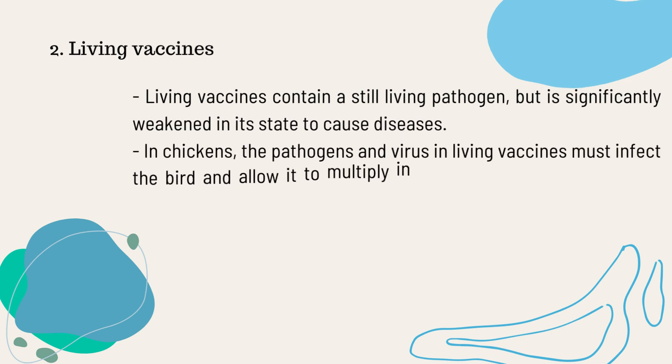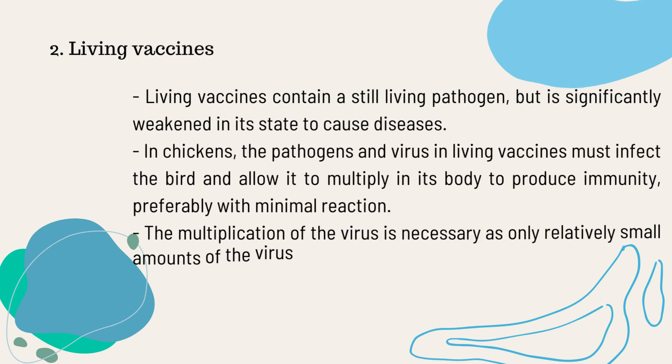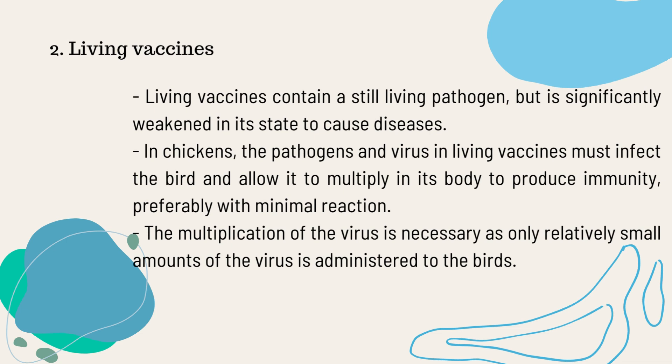The next type of vaccine is the living vaccine. These vaccines contain a still-living pathogen, but it is significantly weakened in its state to cause diseases. In chickens, the pathogens and virus in living vaccines must infect the bird and allow it to multiply in its body to produce immunity, preferably with minimal reaction. The multiplication of the virus is necessary as only relatively small amounts of the virus are administered to the birds.